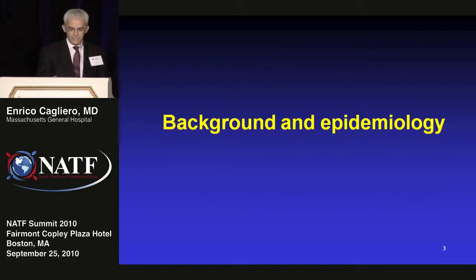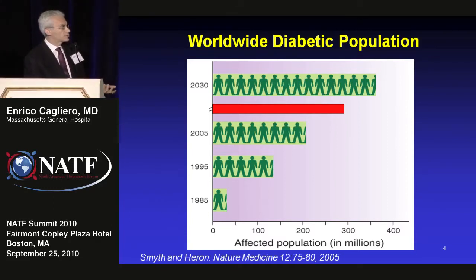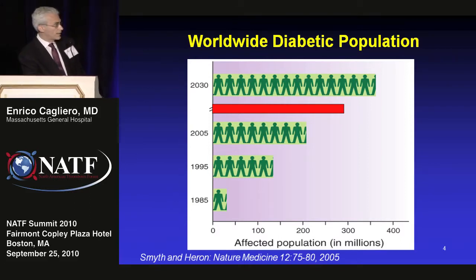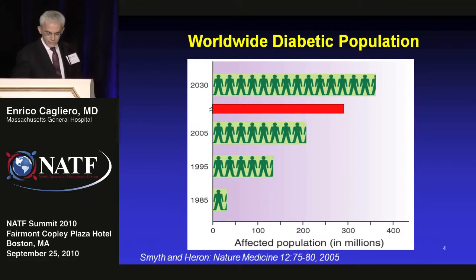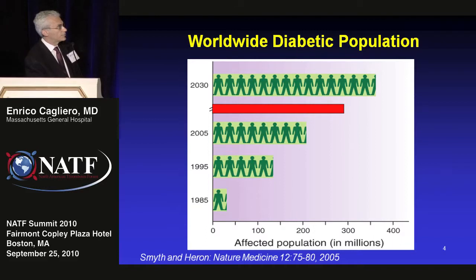We are clearly in the midst of a pandemic of diabetes. These are worldwide projections and data. Back in 1985, when I started my residency at the University of California, San Diego, there were about 30 million diabetic patients worldwide — you would argue diabetes was not a great career choice at that time. Now we are reaching about 300 million worldwide diabetic patients, a tenfold increase over this short time interval, and the projection is that this is going to grow even further.